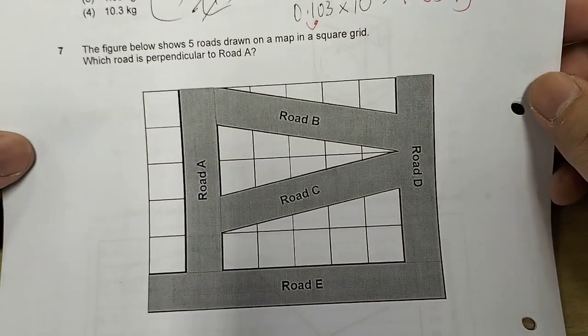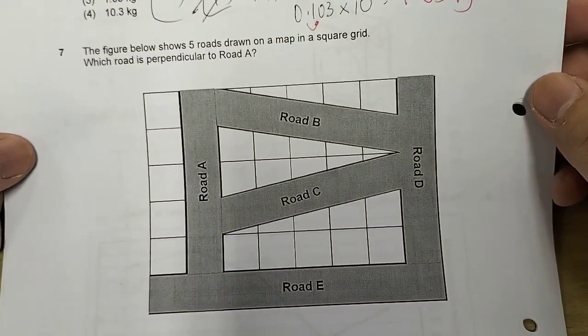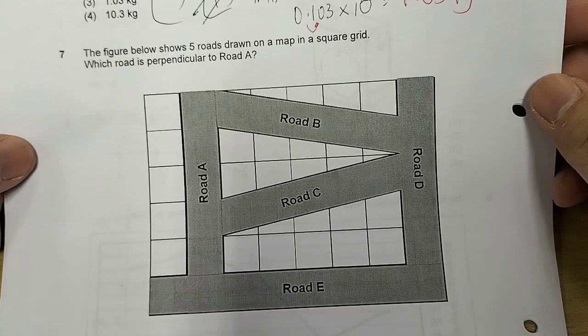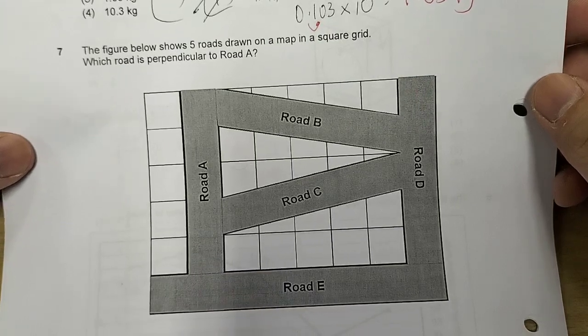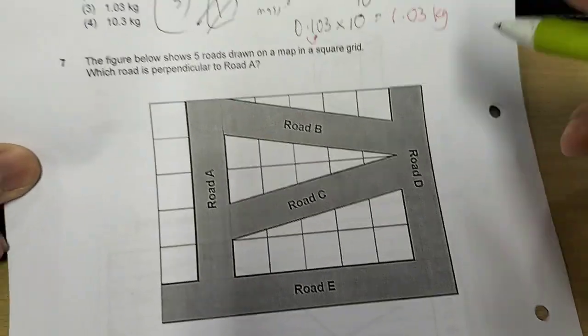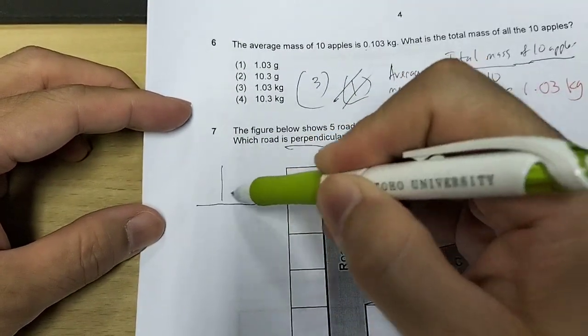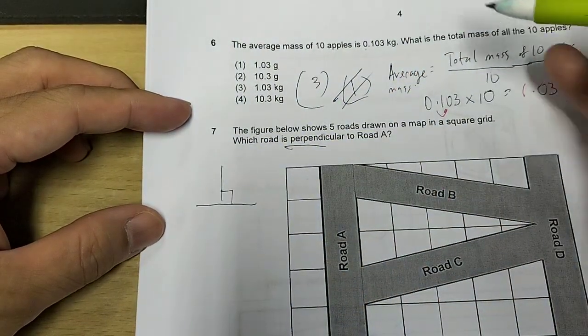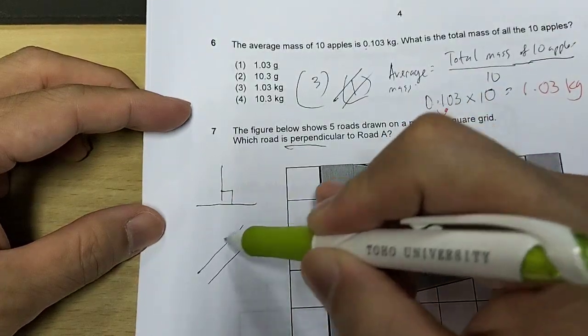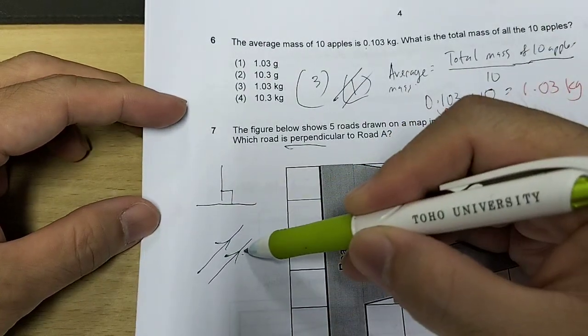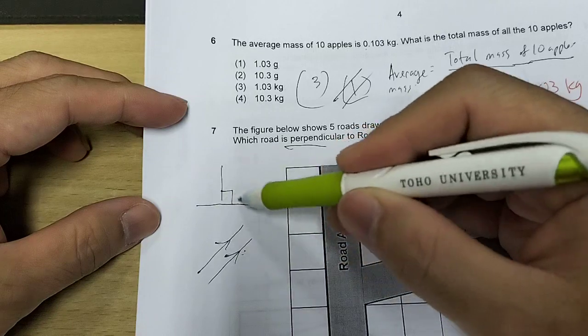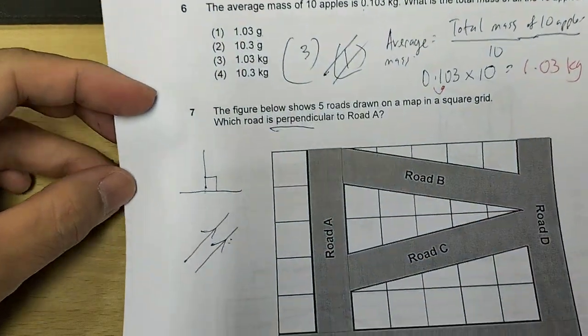Next, the figure shows 5 roads drawn on a map on a square grid. Which road is perpendicular to road A? So now, let's recap what's the meaning of perpendicular. Two lines that are perpendicular meet at right angle. Parallel means lines that do not meet.